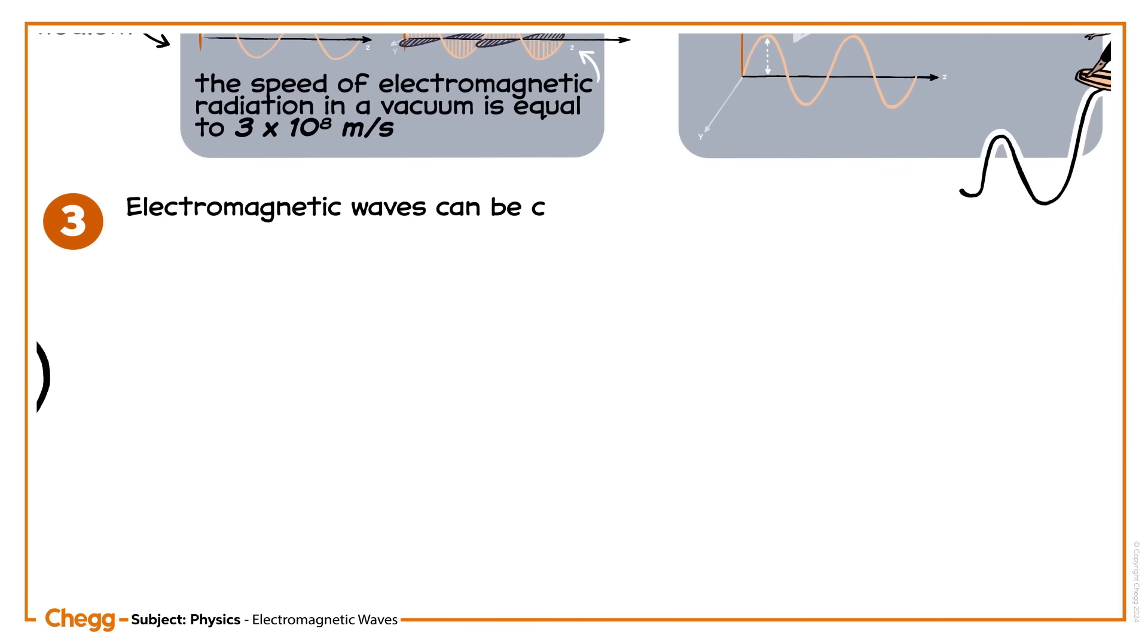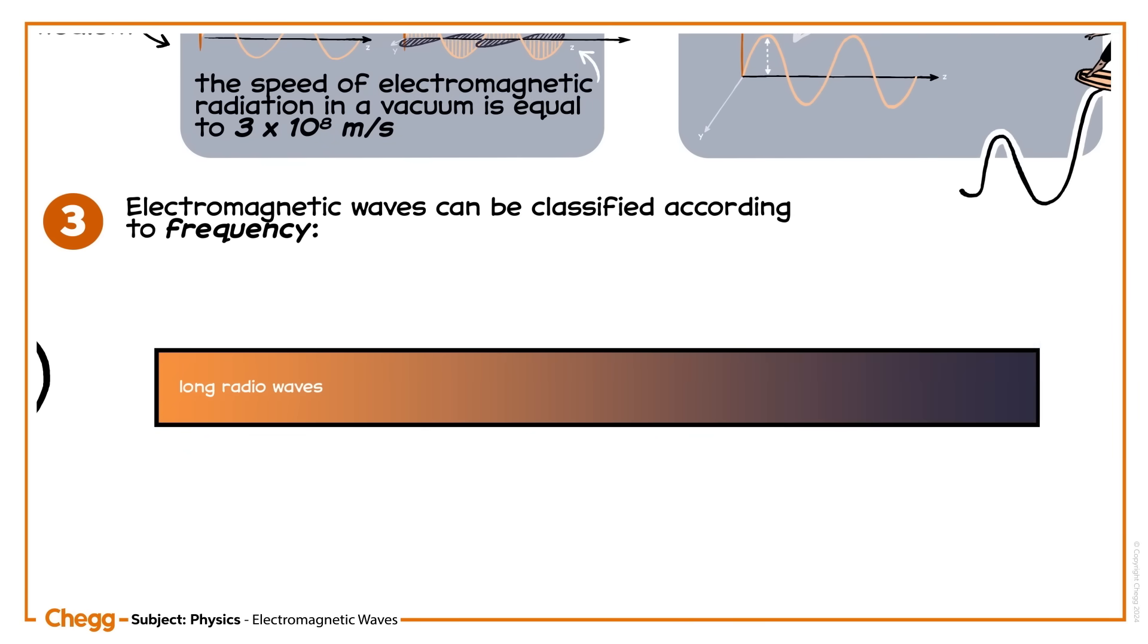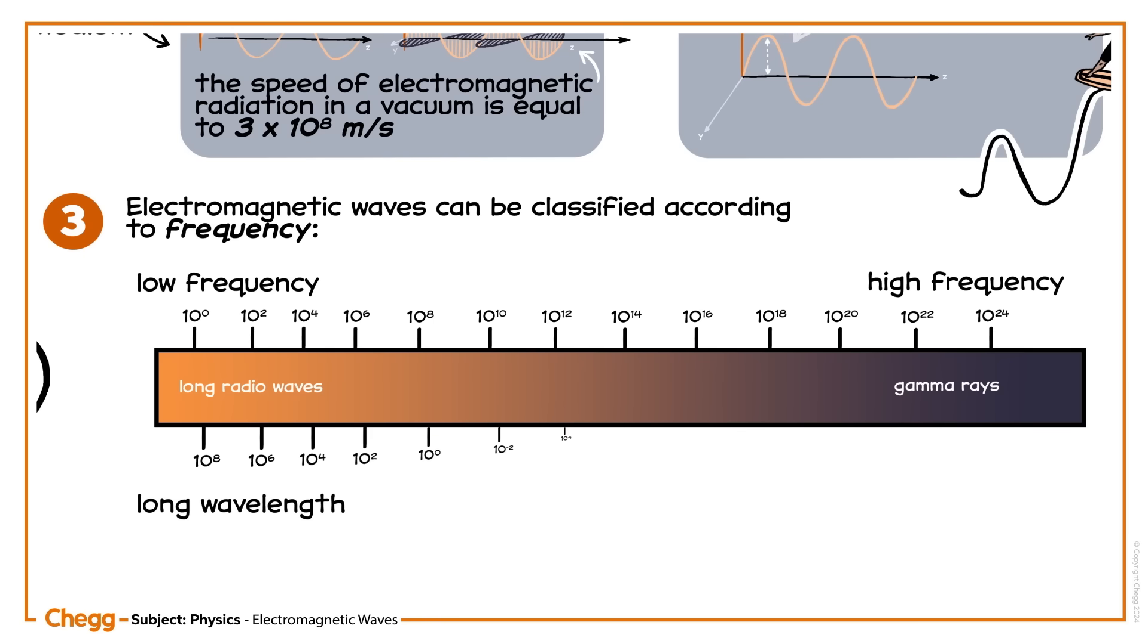Electromagnetic waves can be classified according to frequency, from radio waves on one end of the spectrum to gamma rays on the other. Frequency increases as you go from left to right. Since they are inversely proportional, that means wavelength decreases.